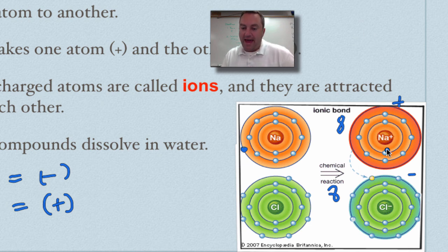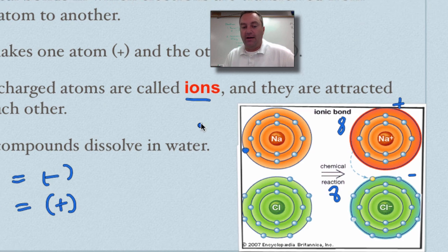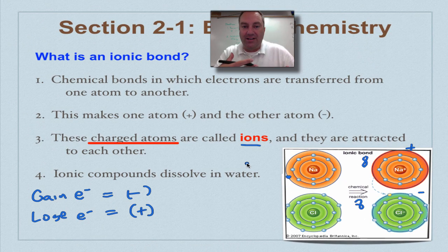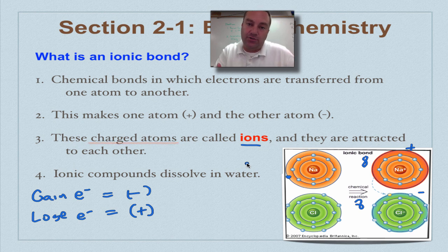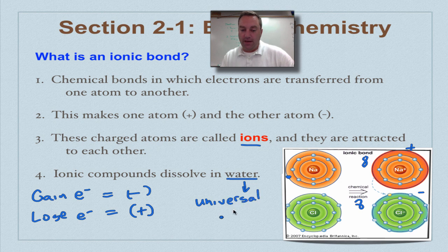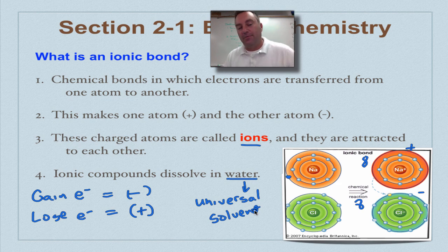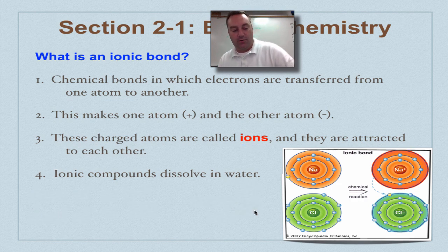This charged atom of sodium is called an ion. This is a charged atom. In other words, it has an extra electron or it's missing electrons. This would be a positive ion, this would be a negative ion, opposites attract. One of the cool things about ionic compounds is they dissolve in water because water is known as the universal solvent.